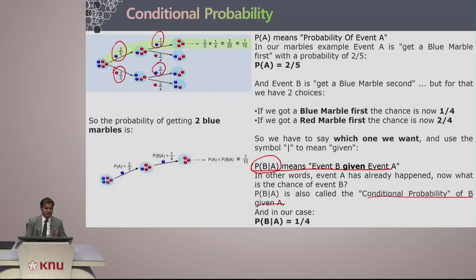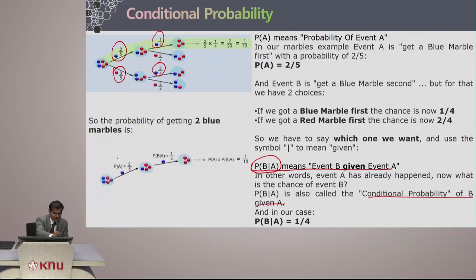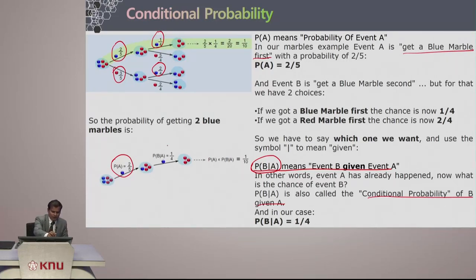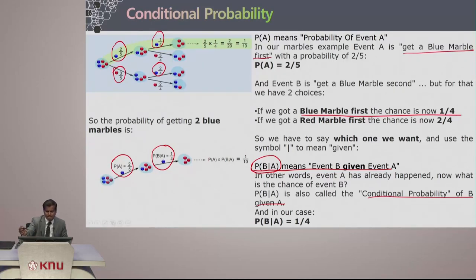In this example, the probability of B given A is 1 by 4 — when the blue marble was picked up in the first instance. Let us build this up step by step. Probability of A is the initial probability — getting a blue marble first. The second chance is 1 by 4, that is the probability of B given A: getting a blue marble first and then getting a blue marble the second time.